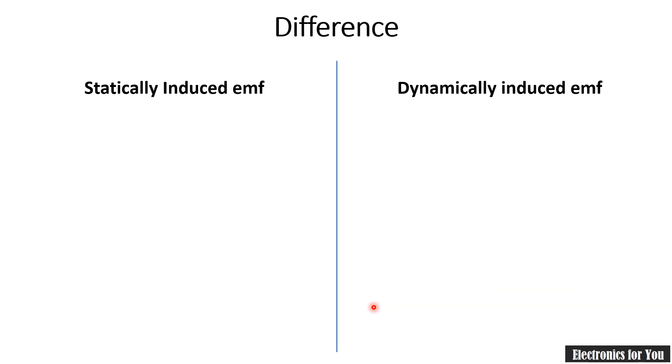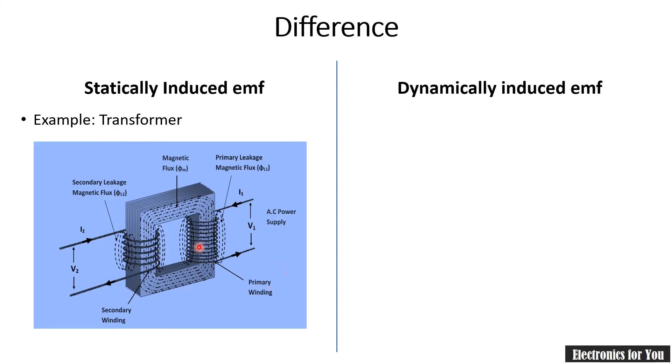The next point is the example. In case of statically induced EMF, the example is a transformer. Here you can see that we have applied the AC supply. We know that AC supply is continuously changing current, and therefore there will be EMF induced in the secondary coil.